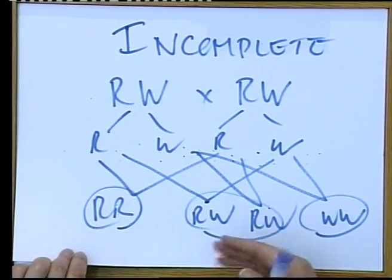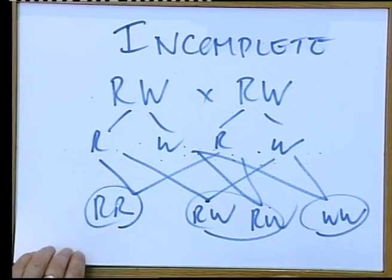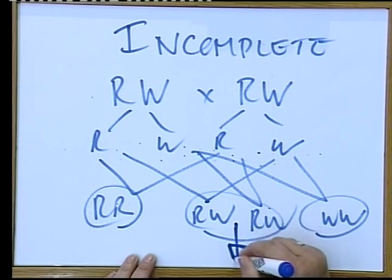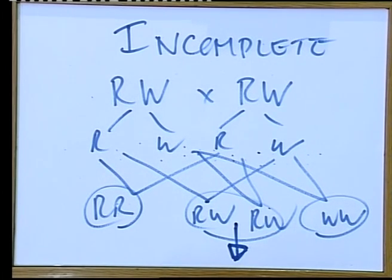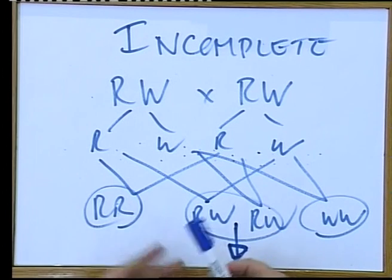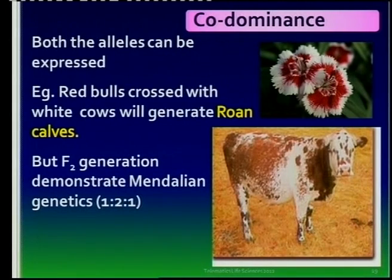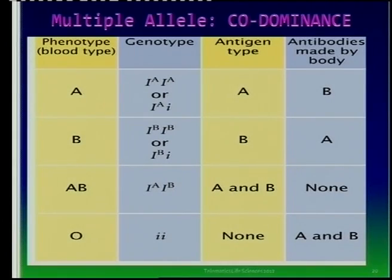With co-dominance you get the same Punnett square outcome, but the colour will not be a mix like pink - it will be both colours expressed. With carnations, you see red and white, not pink - both colours are shown. Blood groups are actually one of the co-dominance characteristics that learners must know.